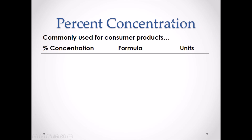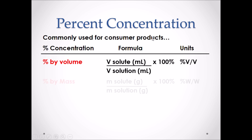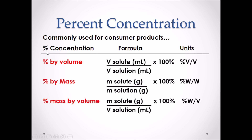Percent concentrations are concentration values commonly used for consumer products. There are three actual percent concentrations. Percent by volume has the formula: solute measured in milliliters divided by the overall solution in milliliters, times 100%. The units for percent by volume are percent V divided by V.